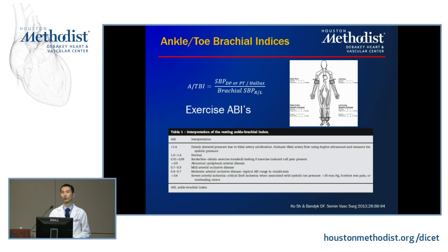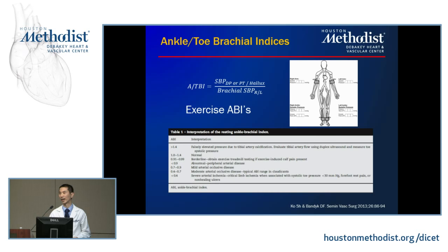The ankle-brachial index is tried-and-true and first-line. It's obtained by getting systolic blood pressure in both arms, using the highest as a denominator, and getting ankle blood pressure at the dorsal pedal or posterior tibial for each limb, using the highest as a numerator. Everyone agrees that less than 0.9 is evidence of PAD; above 1.4 may indicate calcific disease. Around 0.5 or 0.4 approaches critical limb ischemia territory. For borderline cases around 0.9, exercise ABIs are a class 1 indication per the 2016 PAD guidelines.